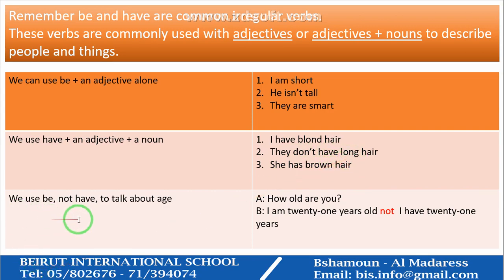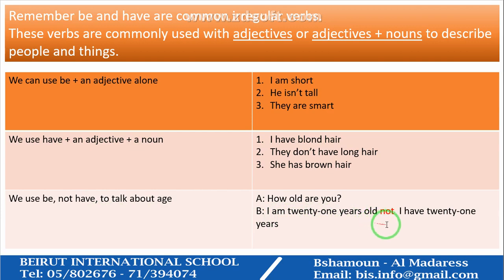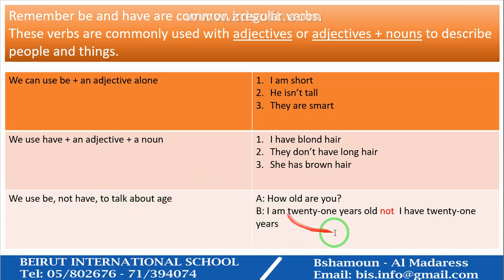We use BE, not HAVE, to talk about age. Whenever you are asked about age, you must use verb BE and not verb HAVE. Say 'I am 21 years old', not 'I have 21 years.' When talking about age, always use verb BE.